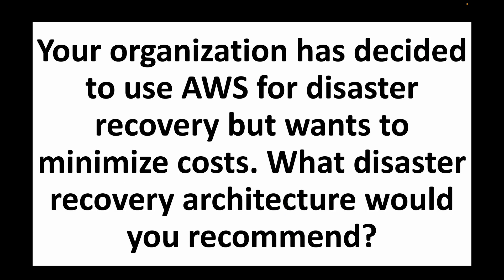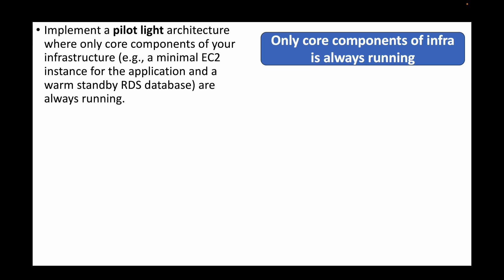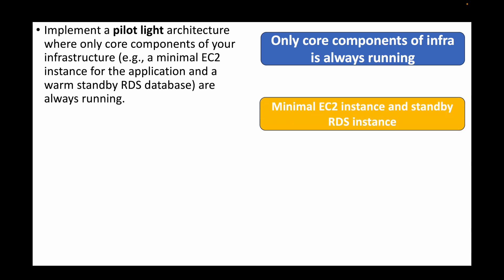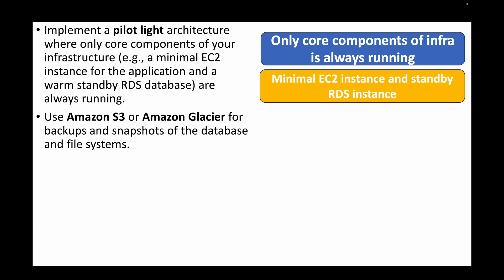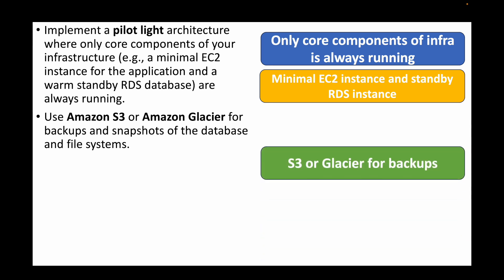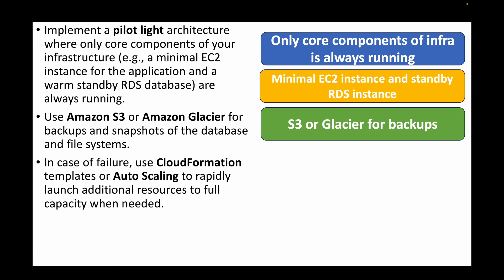The next question is: your organization wants to use AWS for disaster recovery but also wants to minimize cost — what disaster recovery architecture would you recommend? For this, we implement a pilot light architecture where we keep only the core components running — a minimal EC2 instance for the application and a standby database — and use S3 buckets or Glacier for backups and snapshots.